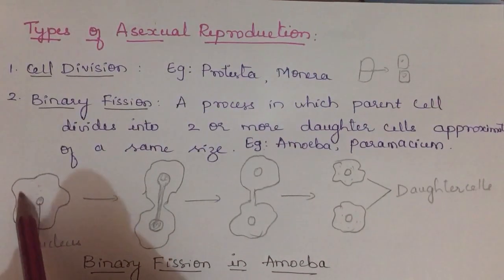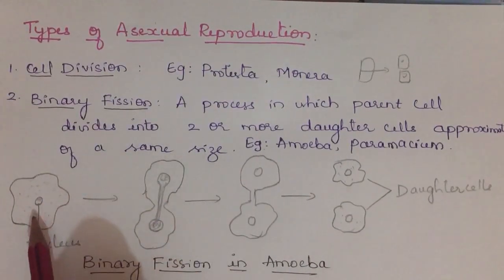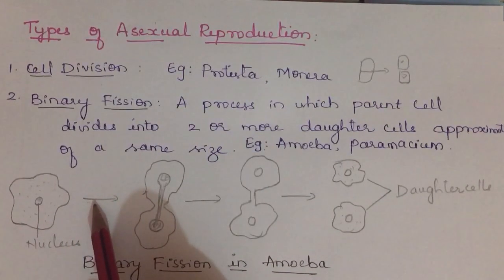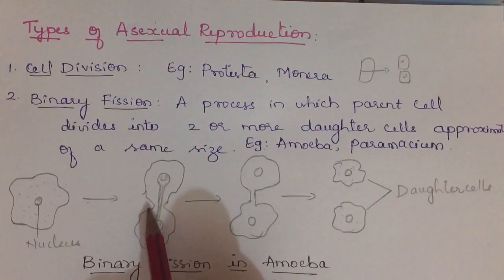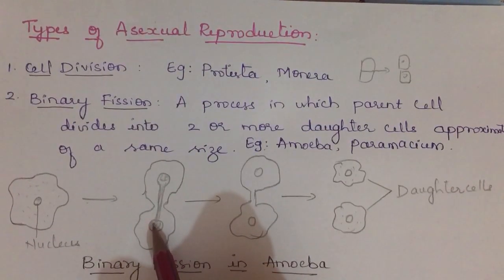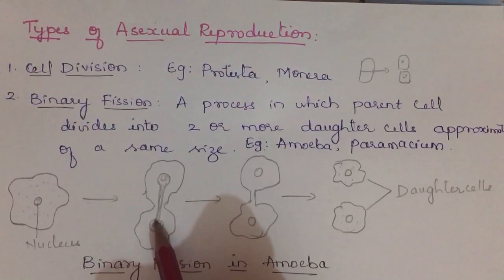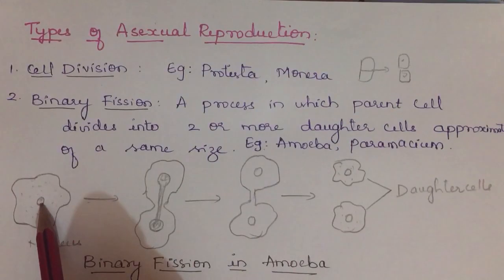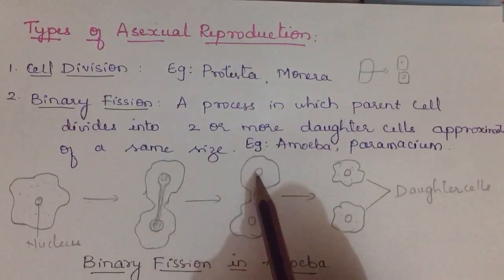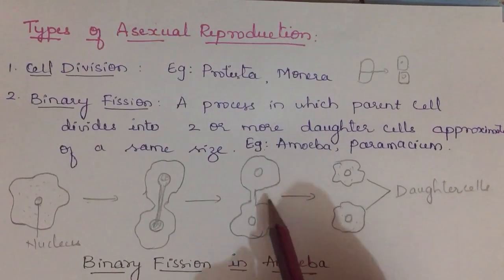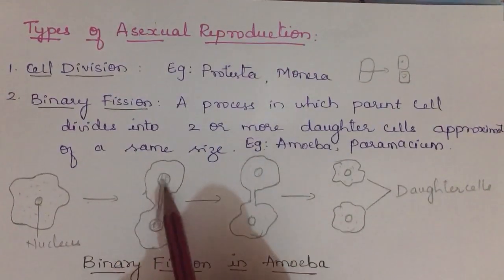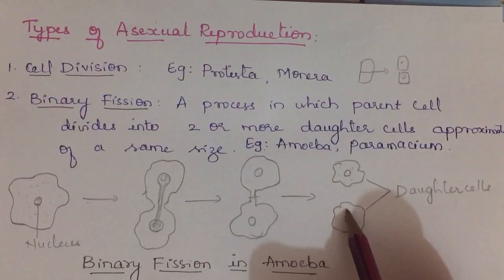Looking at amoeba — it has a nucleus, cytoplasm, and other organelles. When undergoing asexual reproduction, amoeba starts dividing, beginning with karyokinesis — karyon means nucleus, kinesis means division. The nucleus at the center of the parental cell starts to divide, resulting in two daughter nuclei.